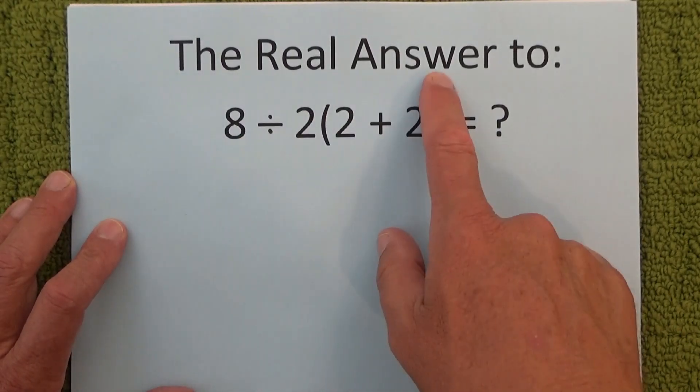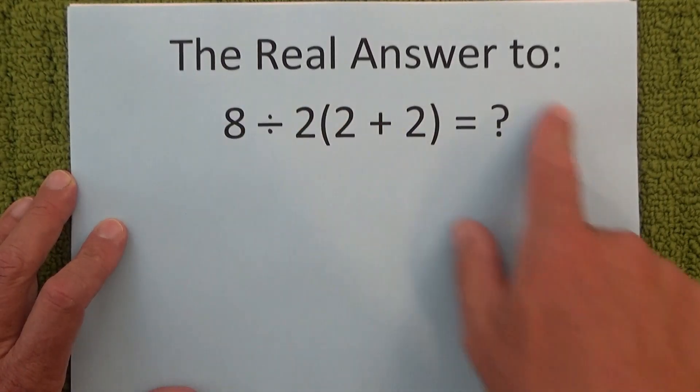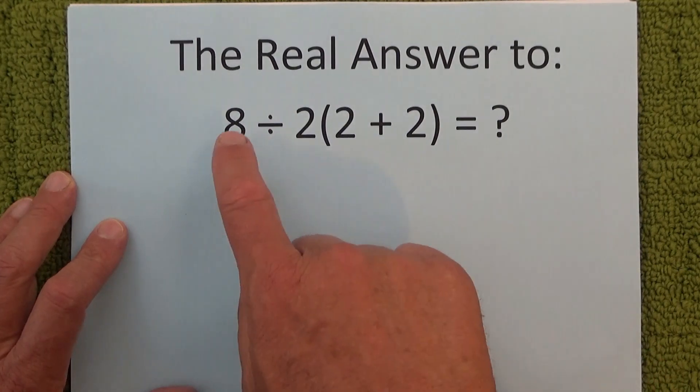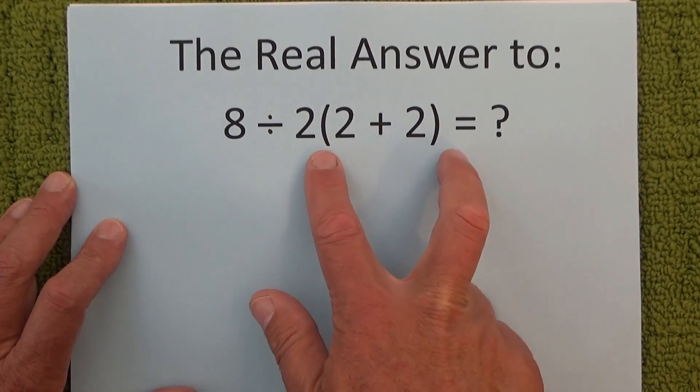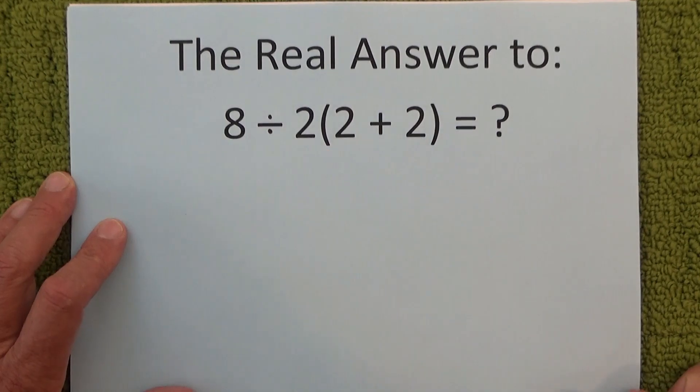Hello, today I'm going to show you the real answer or the correct answer to the following equation which is 8 divided by 2 and that's multiplied by 2 plus 2 which is in brackets.